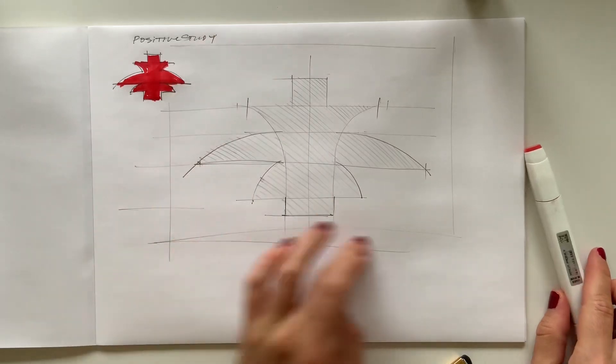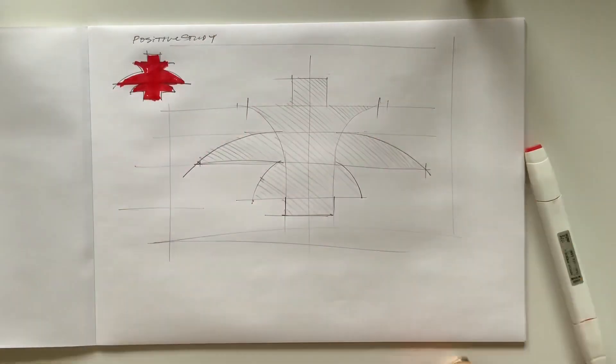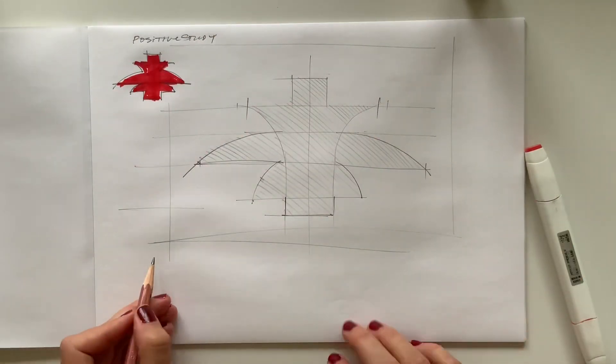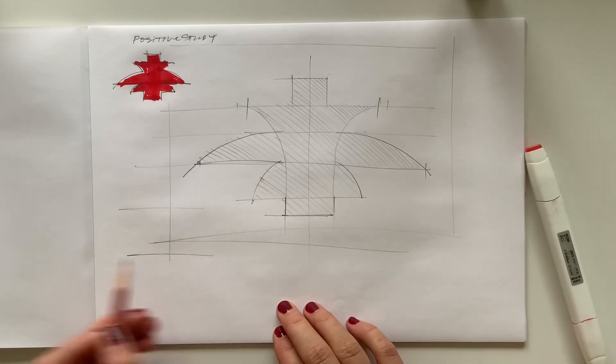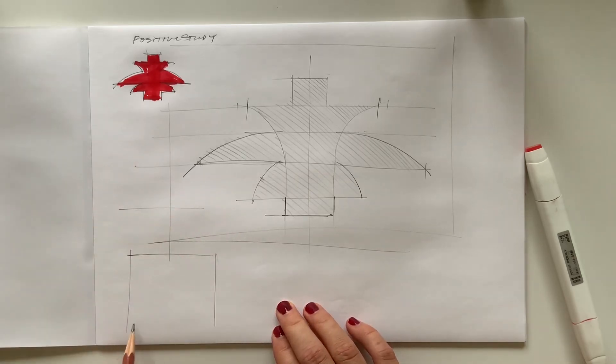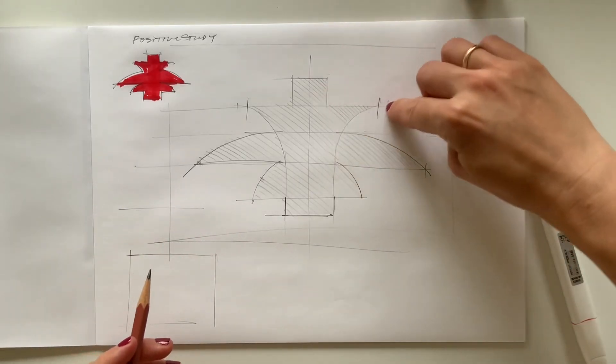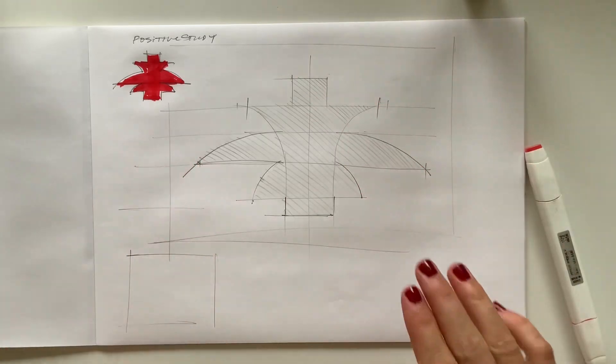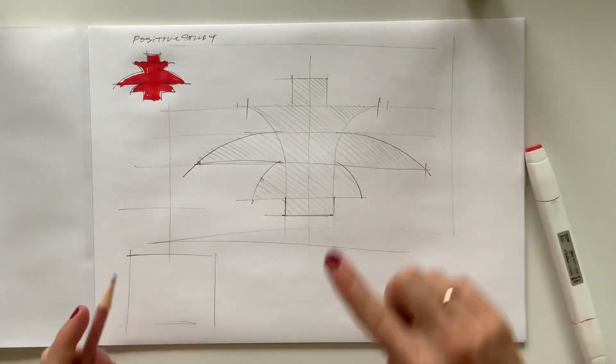So I'll do it here. Now what I'm doing is I'm focusing on the form which is created by the white space around the object, not on the object itself.